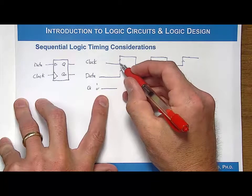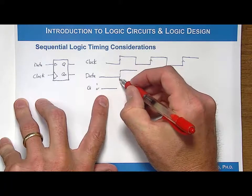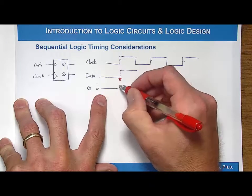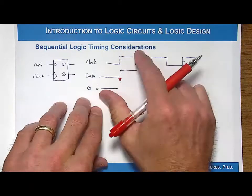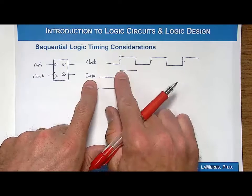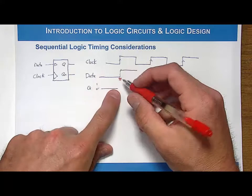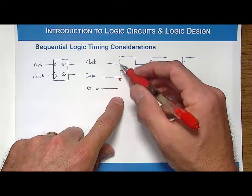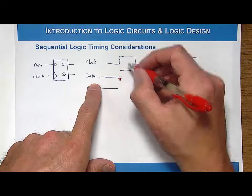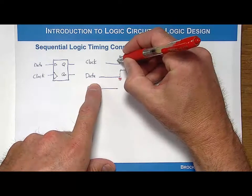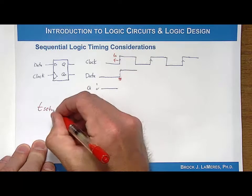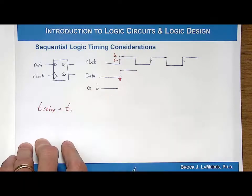Let's say that Q was at zero to begin with, and the clock occurred right here — will Q be a zero or one? It happened right here, it could have stayed at zero, but then again the transition was very close so it could have actually stored the one. You don't really know what it's going to do. This is the major timing consideration we have to consider when using D flip-flops: we can't have the data transition too close to the clock, or else the D flip-flop will go metastable. There are two specifications that dictate how close to the clock edge the data can actually transition.